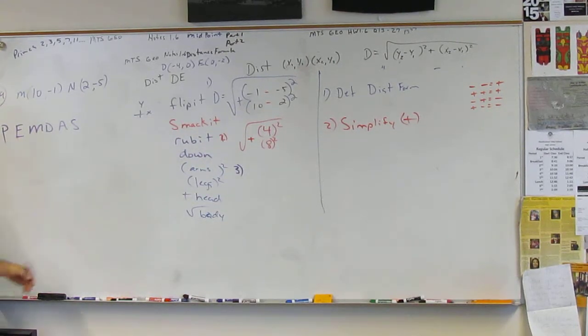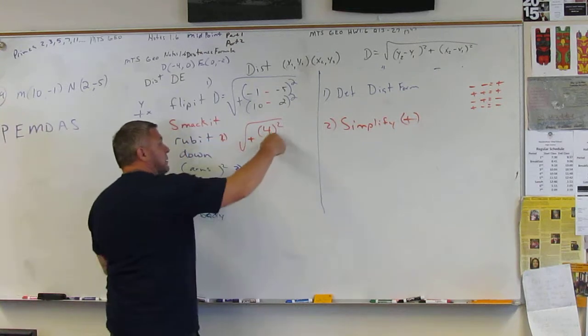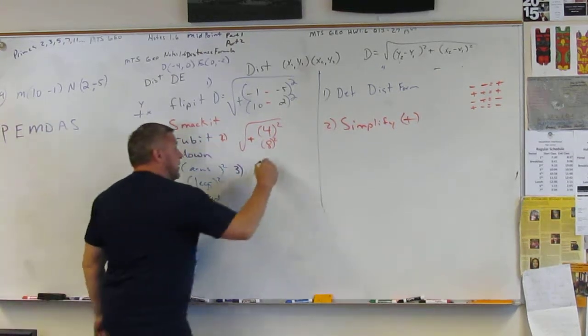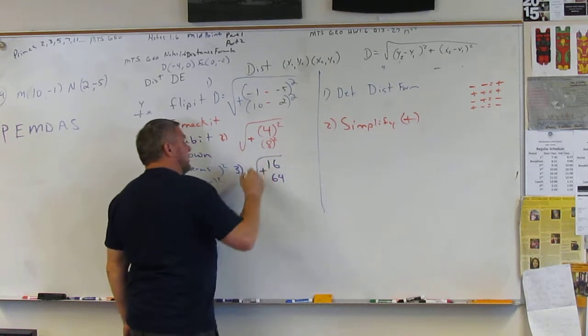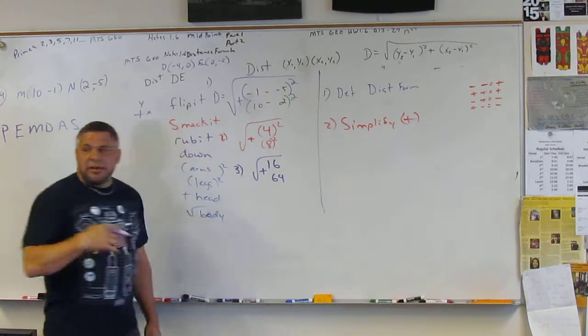Exponents. What's 4 squared? What's 4 squared? What's 8 squared? 64, I heard. Okay? And that's step 3.